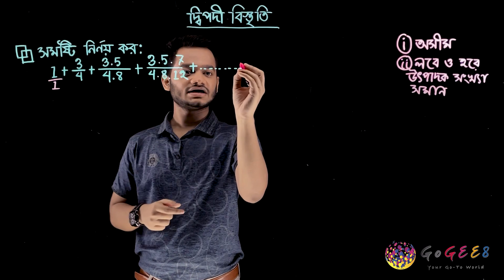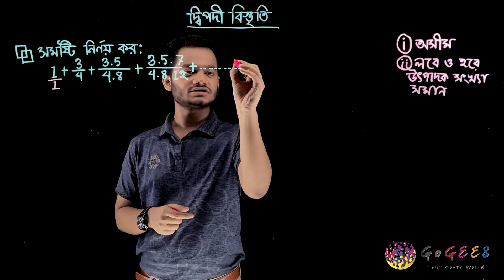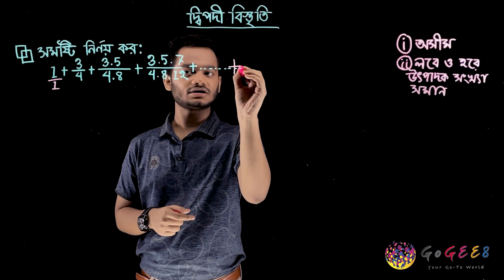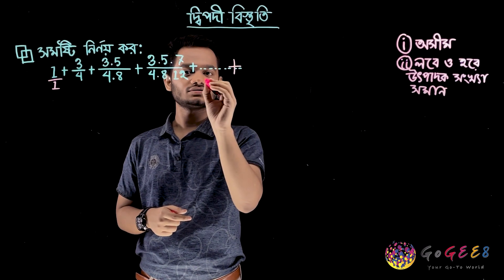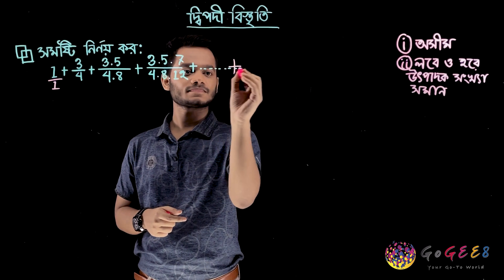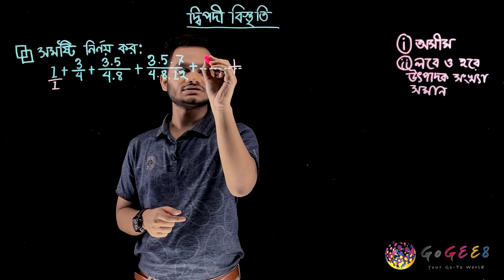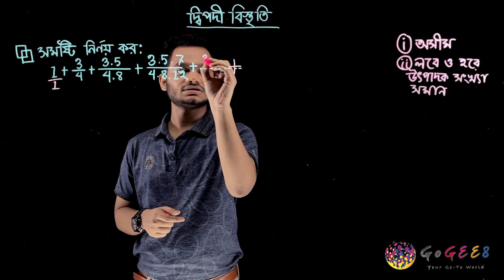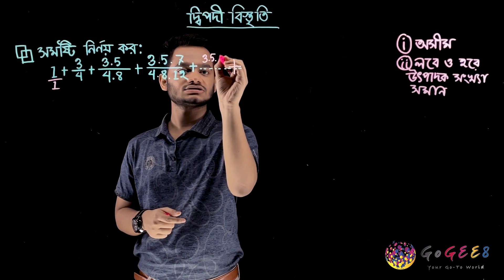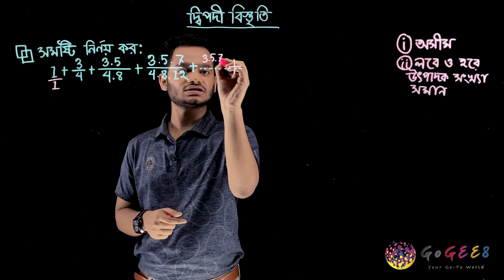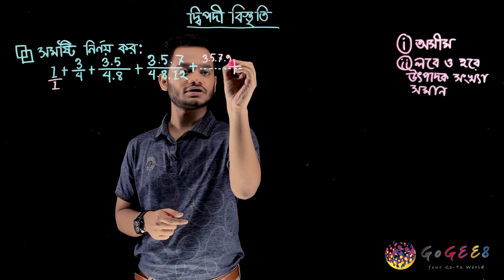5, 7 — which you can write is the key. Then here: 3, 5, 7, 9.